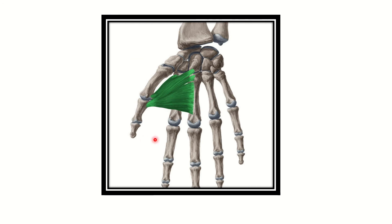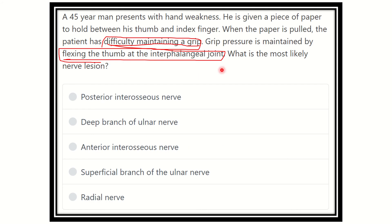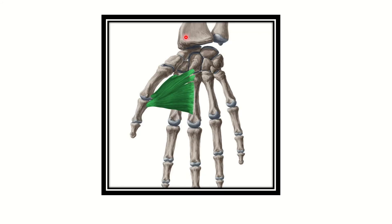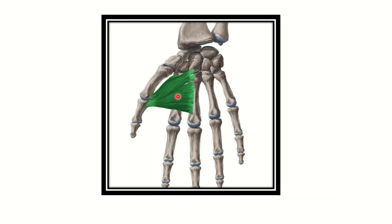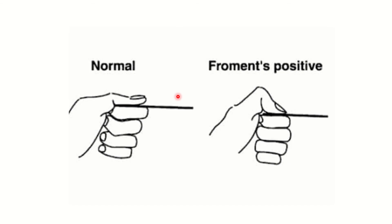The adductor pollicis muscle is responsible for the movement of holding a piece of paper between the thumb and index finger. Normally, the grip is maintained by this muscle. Here we can see how the paper is gripped normally using the adductor pollicis.